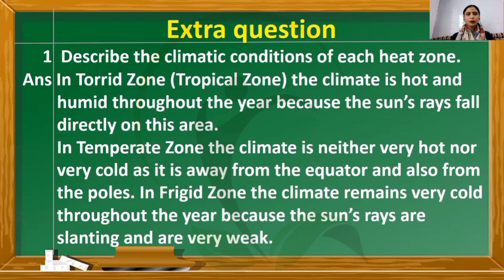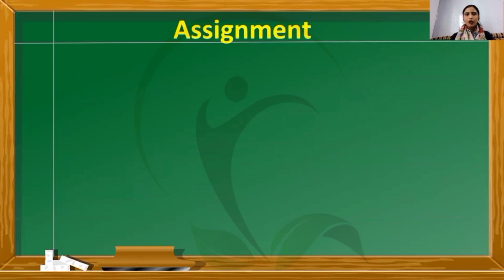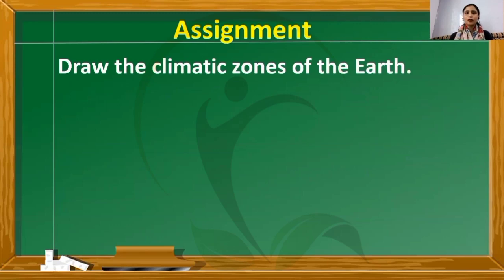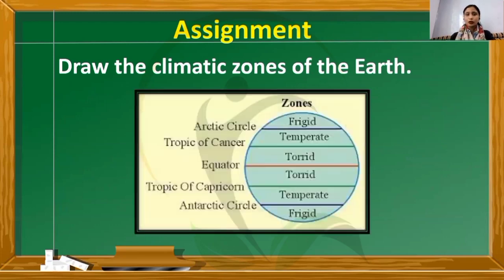Now let us conclude this module with the assignment. The assignment is to draw the climatic zones of the earth — draw a diagram showing the three climatic zones and WhatsApp it to me in PDF format. This is your assignment for the topic weather and climate.